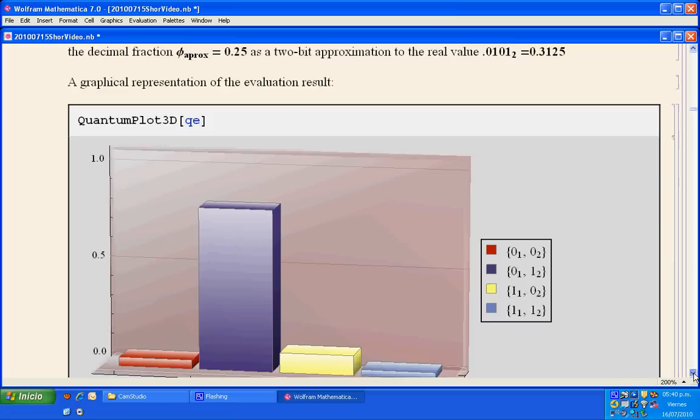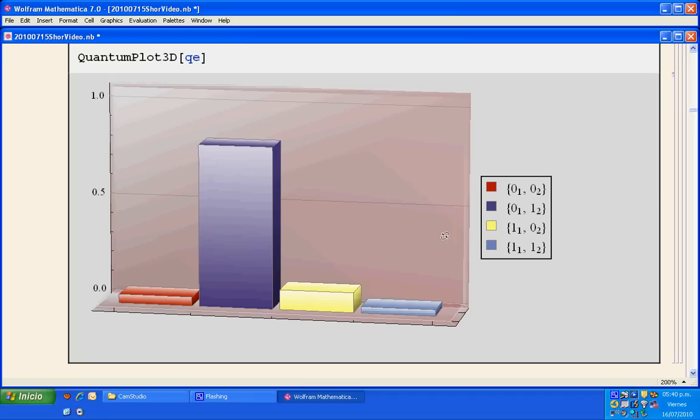We only have two qubits because that's the way the circuit was done. Here you can see also a three-dimensional plot where 01 has the largest probability in the measurement.